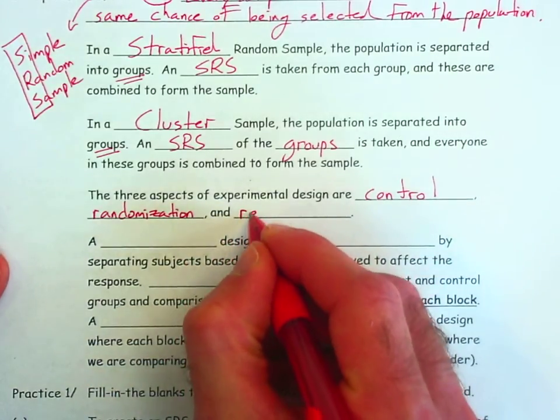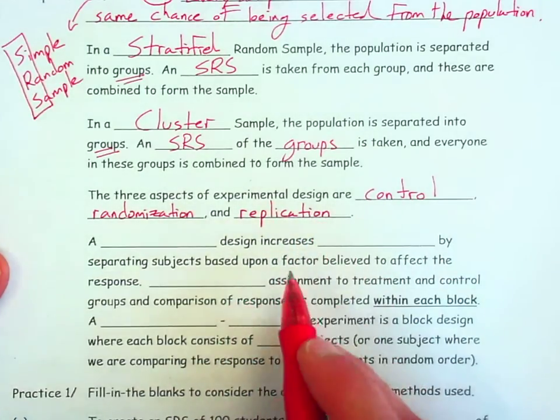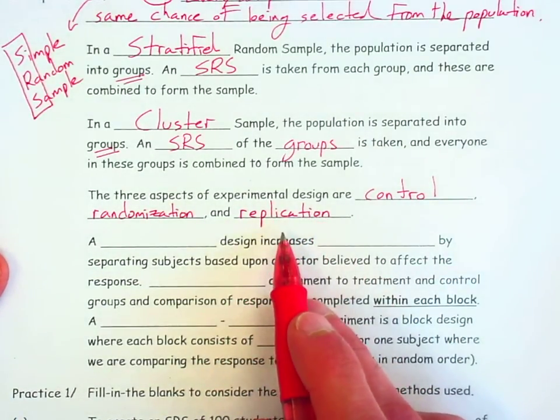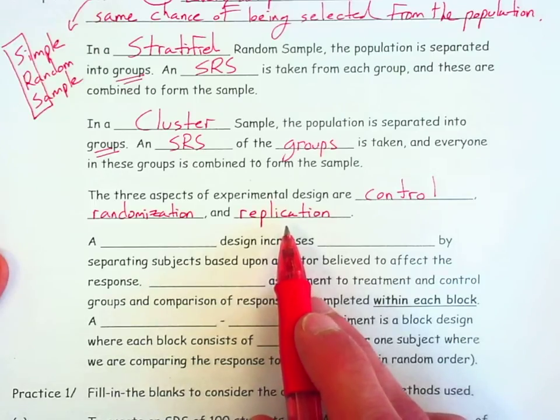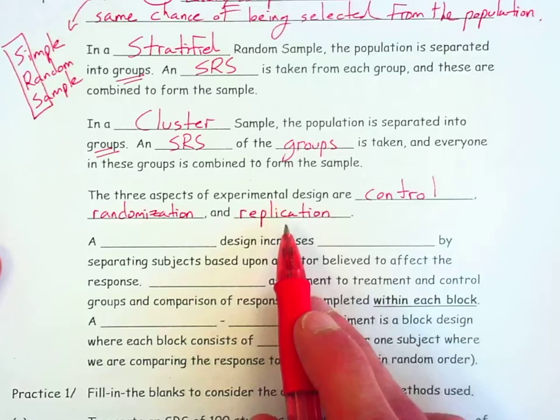And replication. This means that we can't do our experiment on just a few subjects. We need many subjects. We need to replicate the treatments upon many subjects so that we believe that comparisons of responses, what we see within that comparison, is a result of the treatment and not just a result of chance variability between the different subjects. Replication means we want to use many subjects.